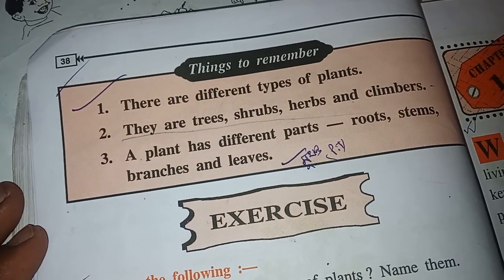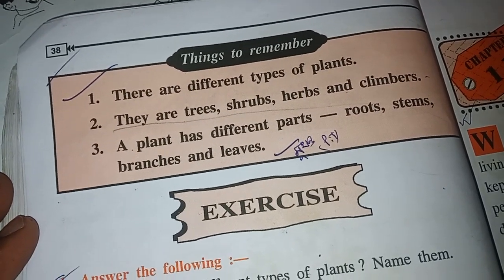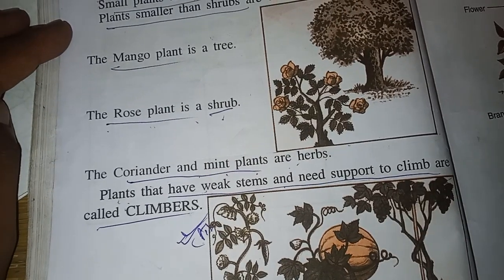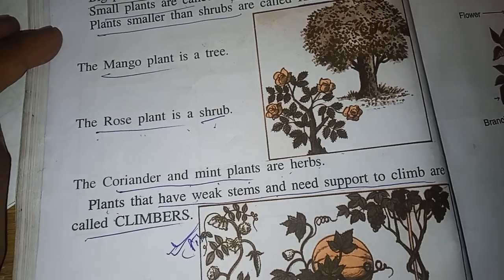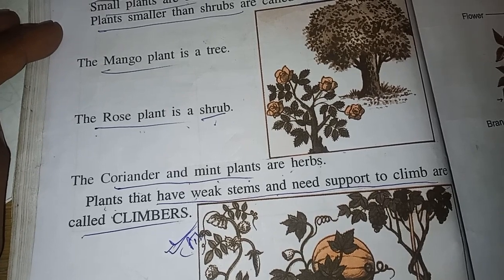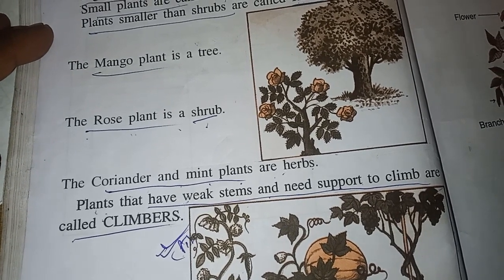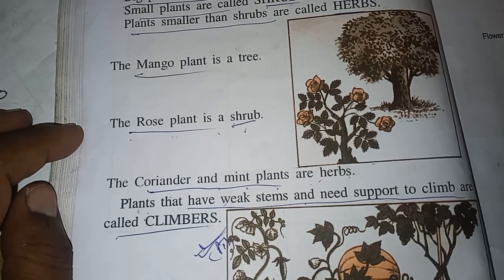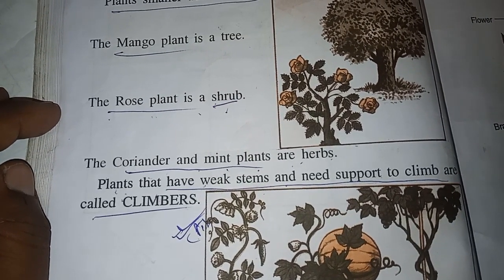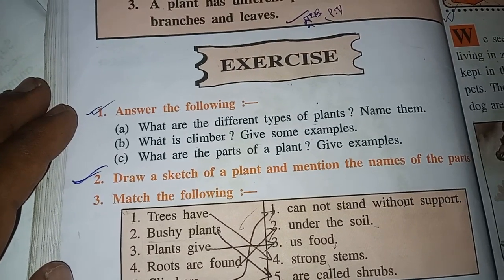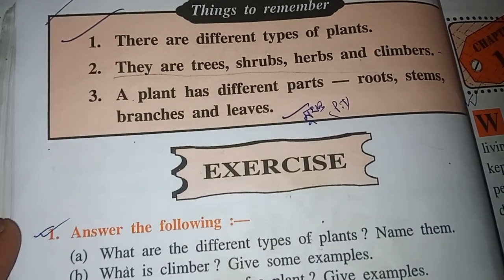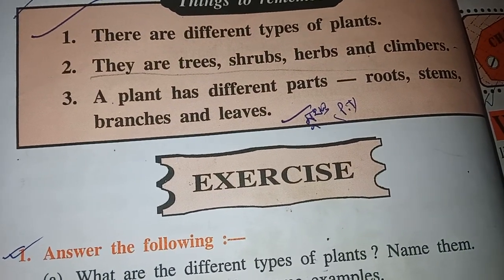What is a climber? Give some examples. Plants that have weak stems and need support to climb are called climbers. Examples include pumpkin, bitter gourd, etc.